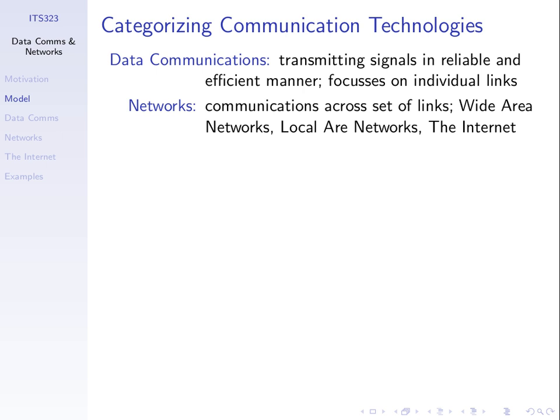We want to communicate across multiple links, and that's where we get a network — communications across a set of links. We can classify networks as generally wide area networks and local area networks, and another classification is the internet.